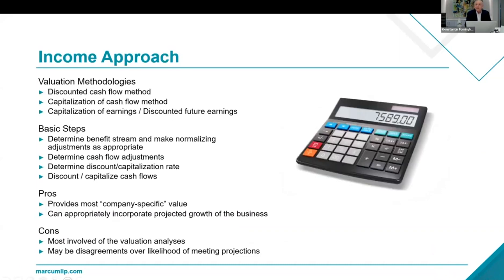The next is the income approach. As discussed, you can either discount the future cash flows or do a capitalization of historical earnings. You have to determine a proper income stream of the company and adjust it for certain cash flow adjustments — things like depreciation. And then I'm going to mention a curse word: normalization. You're going to see why I call it a curse word in a minute.